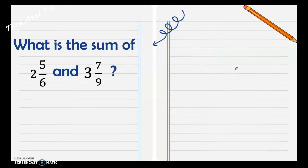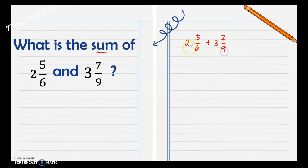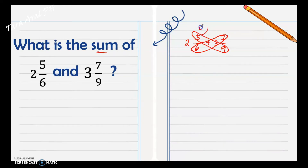Next, what is the sum of two and five sixths and three and seven ninths? The word 'sum' means the answer in addition, so we have two and five sixths plus three and seven ninths. Using the butterfly method, disregard the whole numbers first. Cross multiply: five times nine is forty-five, and seven times six is forty-two.